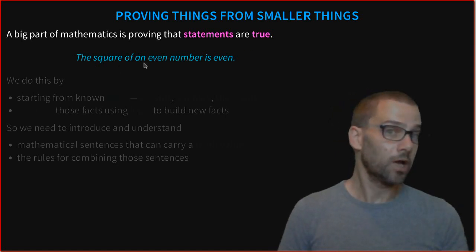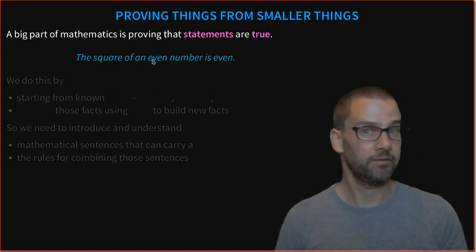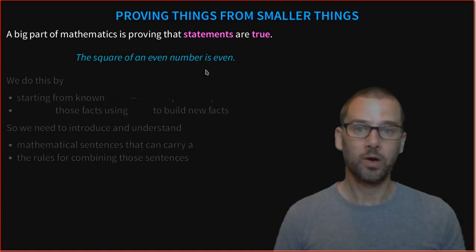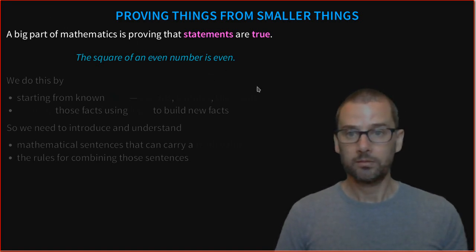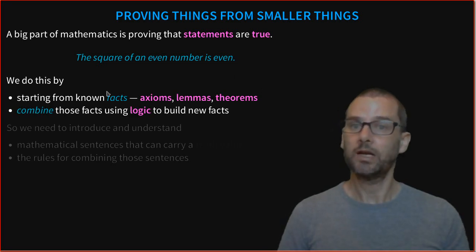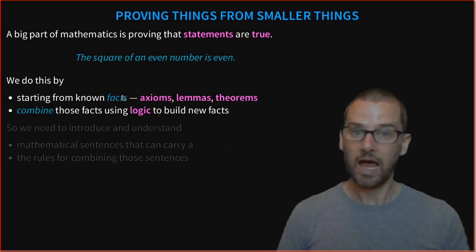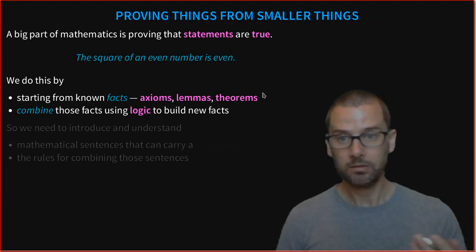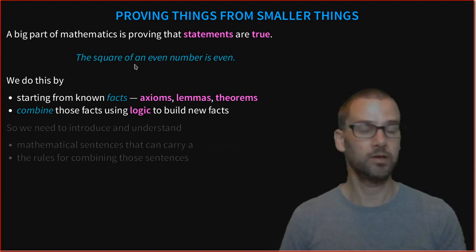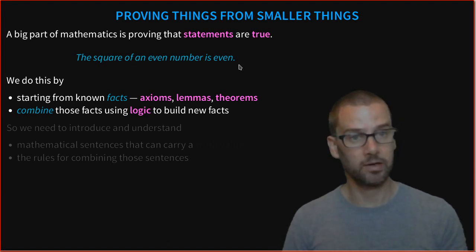For example, we would like to prove, and we will prove as our first thing for this course, that the square of an even number is itself even. We're going to do this by starting from known facts, known true statements, axioms, lemmas, theorems, and combine those using logic to build new facts. Things like, if we have an even number and we square it, we get an even number.